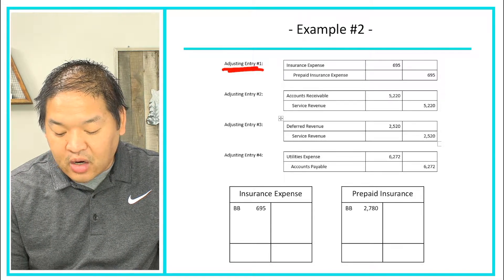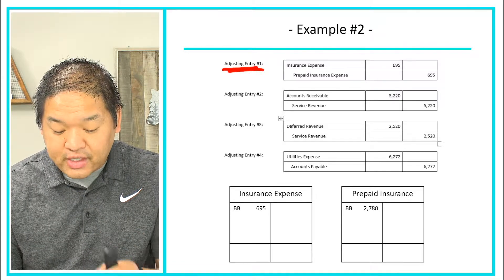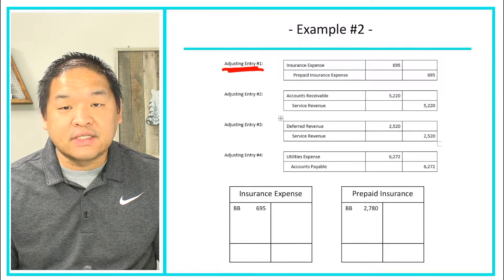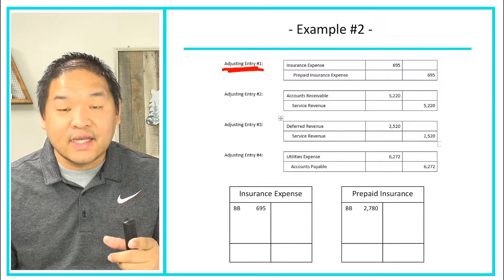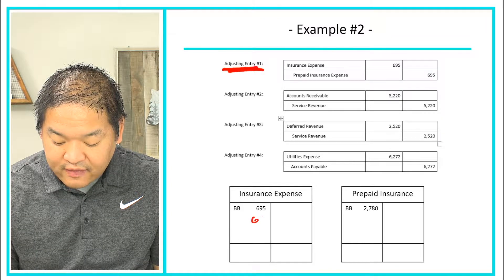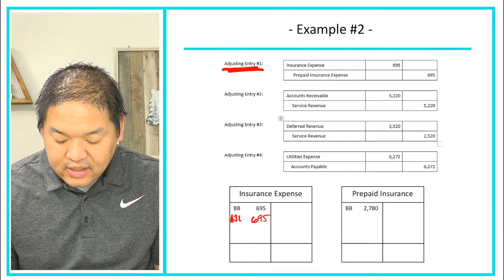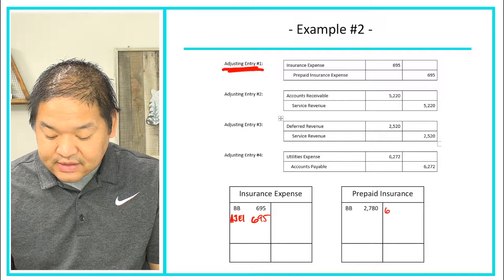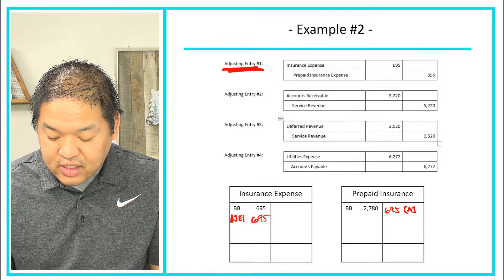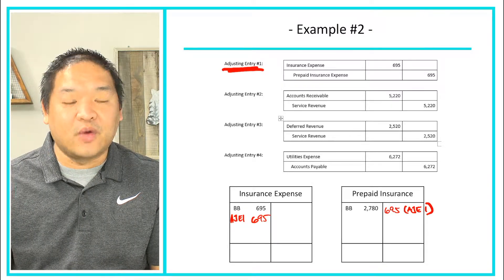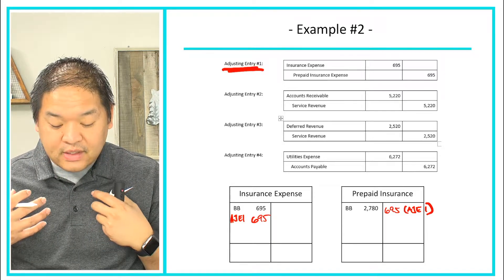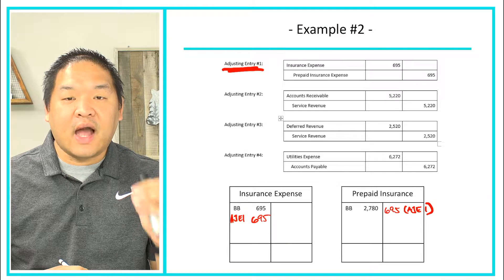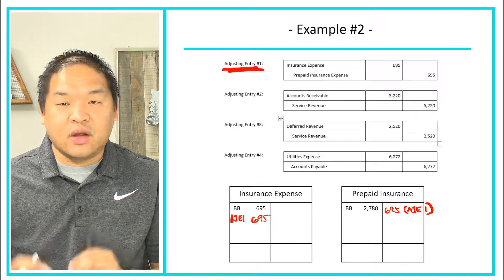Entry number one: we've got a debit to insurance expense and a credit to prepaid insurance for $695. I've got the T-accounts for prepaid insurance and insurance expense. We debit the left-hand side of insurance expense for $695 — AJE-1. On the prepaid insurance, we credit that account for $695 — AJE-1. Now we need to total these up: total all the debit columns, all the credit columns, get the total, then subtract the higher number from the lower number and put the result on the higher side.